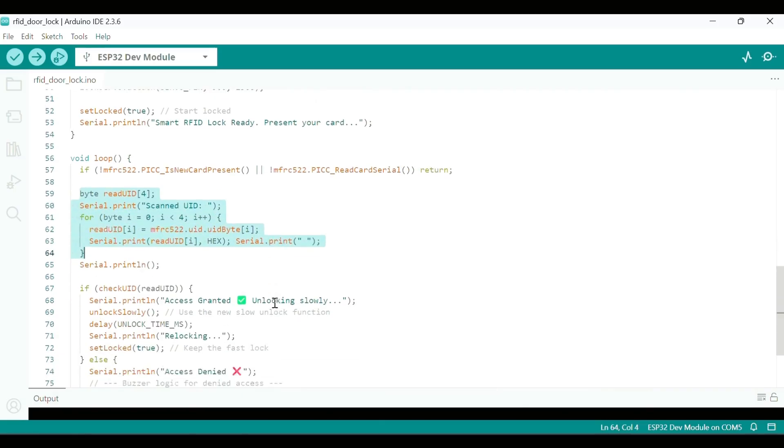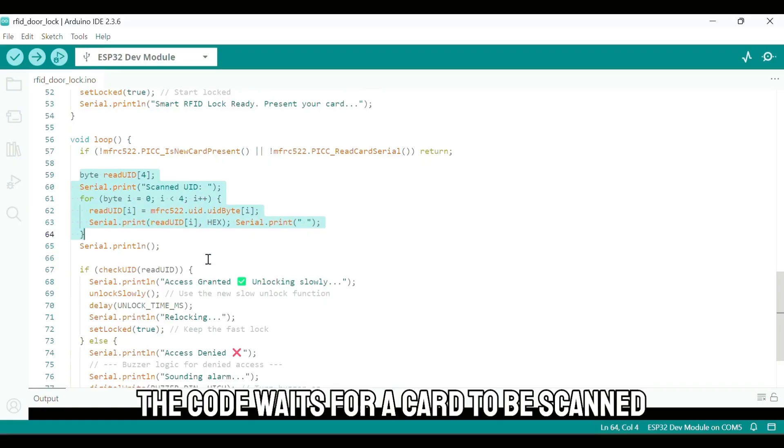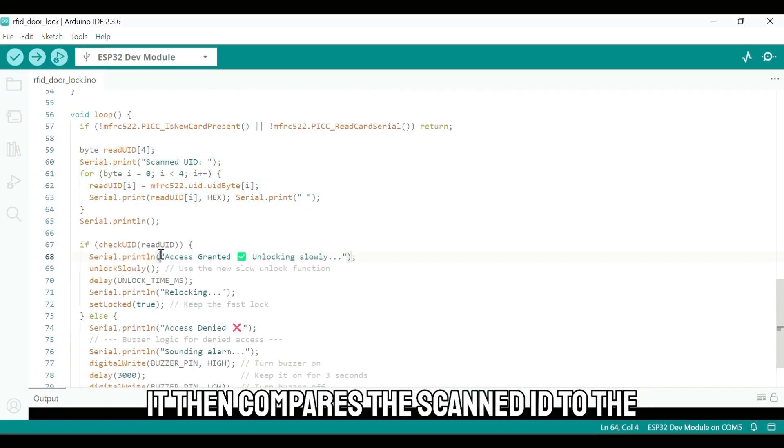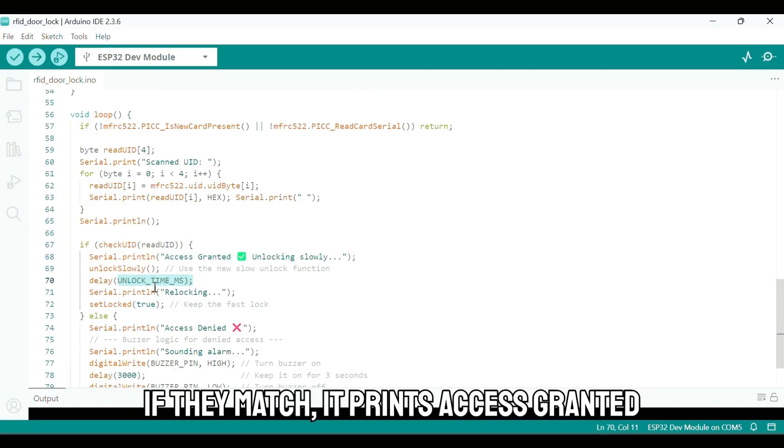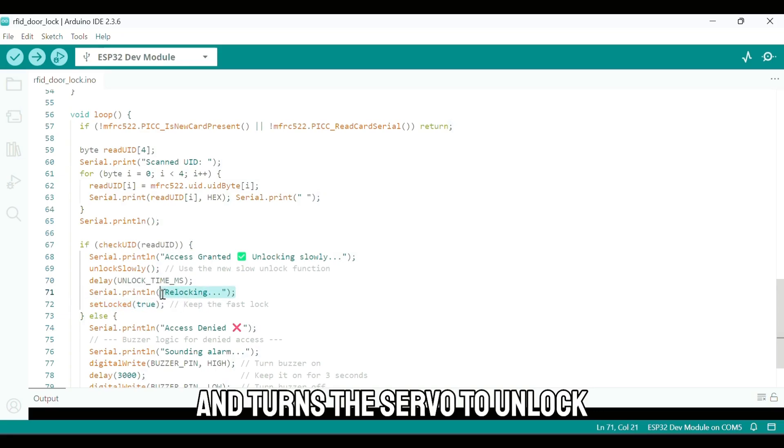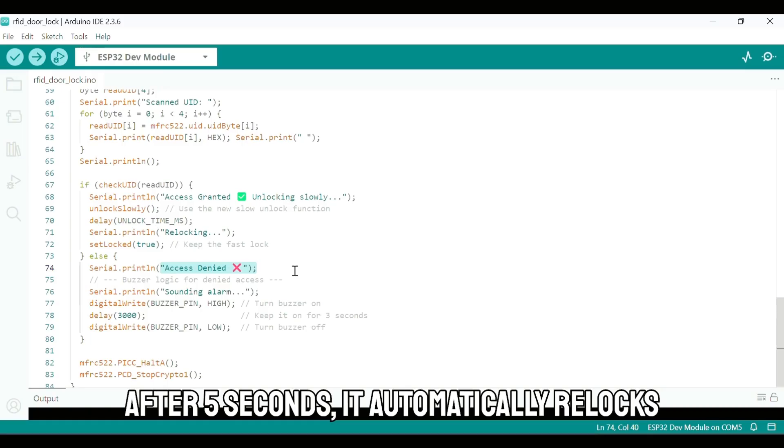In the void loop, this is where the magic happens. The code waits for a card to be scanned. It then compares the scanned ID to the authorized UID. If they match, it prints access granted and turns the servo to unlock. After 5 seconds, it automatically re-locks.